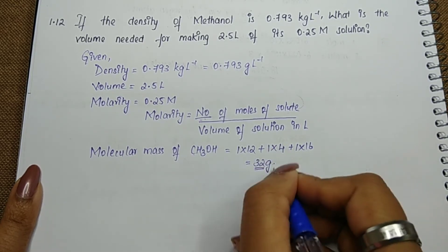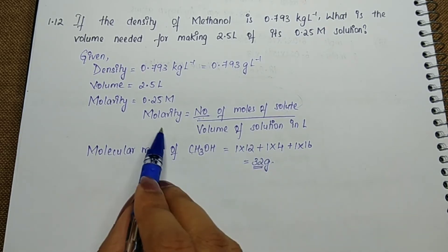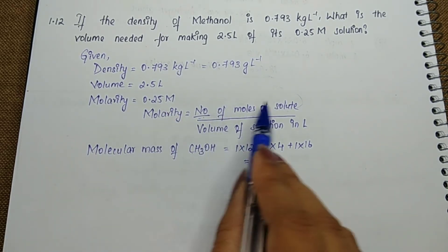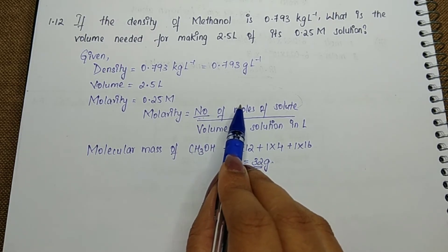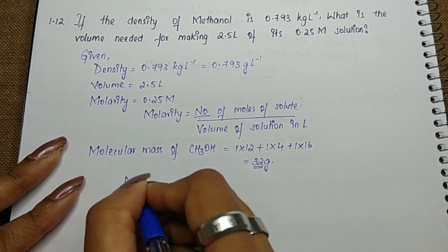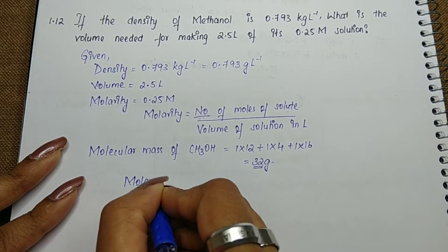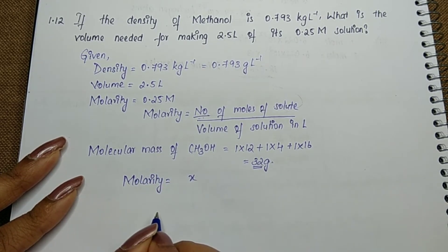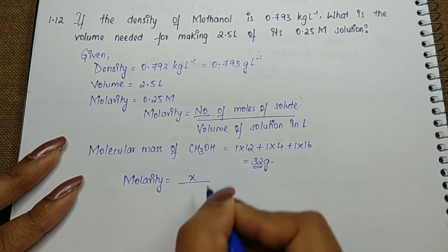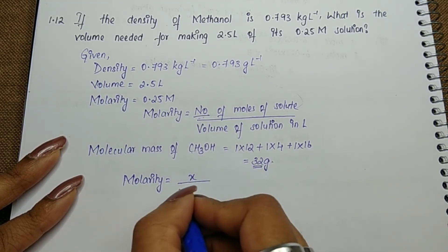We have molar mass, volume, and molarity. From number of moles, molecular mass is known—we need to find given mass. When we write the molarity formula and substitute, x is the given mass divided by molar mass, which is 32.